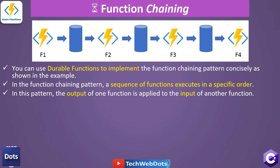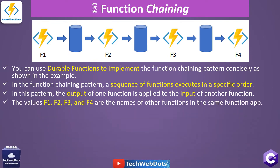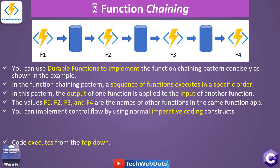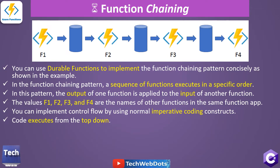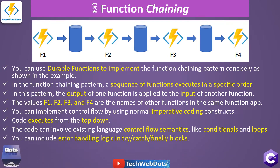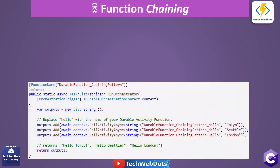In this pattern, the output of one function is applied to the input of another function. The values function1, function2, function3, and function4 are the names of other functions in the same function app. You can implement control flow using normal imperative coding constructs - for example, if/else conditions or loops to manage your function's code, executing from a top-down approach. You can also include error handling logic in try/catch/finally blocks.